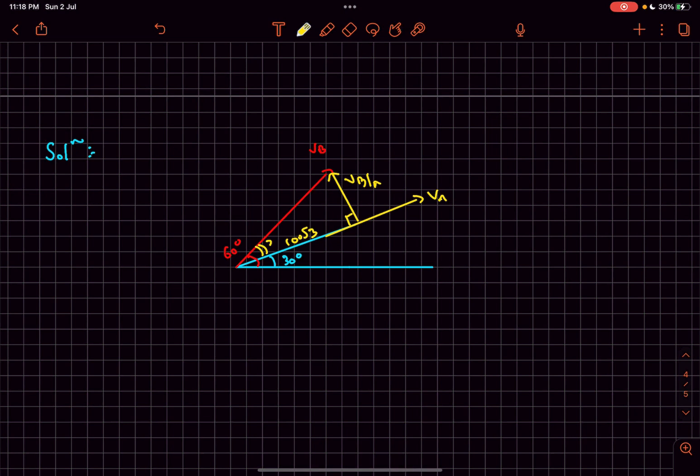It will be 100 root 3 times tan 30, which is 1 by root 3, comes out to be 100 meters per second. It was given that the relative distance of B with respect to A was 500 meters. Now as the relative speed is 100 meters per second and the relative distance is 500 meters...